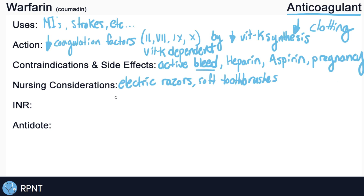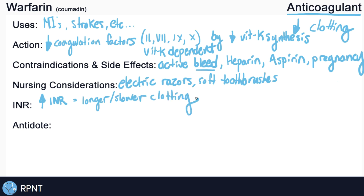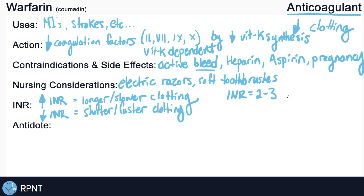INR is short for International Normalized Ratio and it's a blood test used to monitor the effects of warfarin. It measures how long it takes the patient's blood to clot — the higher the INR, the longer or slower it takes blood to clot; the lower the INR, the shorter or faster the clotting. For patients who take warfarin regularly, we expect their INR to be anywhere between 2 and 3, though sometimes you'll see 2 to 3.5.